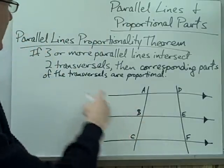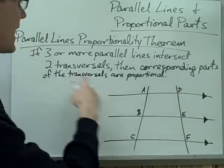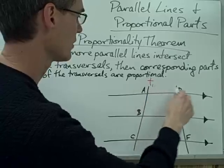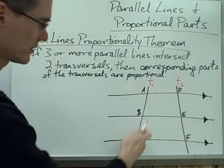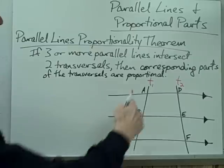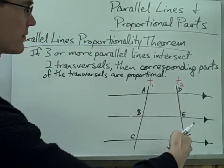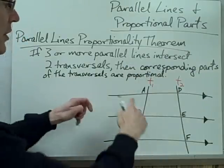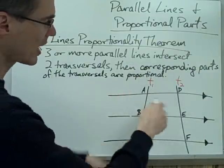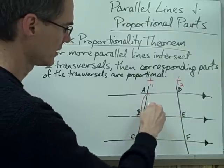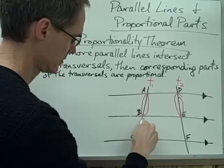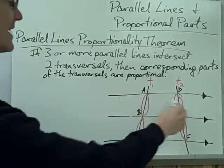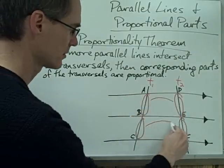Here I've got a diagram with three parallel lines, and those parallel lines are intersecting these two transversals — I'll call this T1 and T2, transversal 1 and transversal 2. These three parallel lines are intersecting these two transversals, so according to this theorem, the corresponding parts of the transversals are proportional. The parallel lines are basically chopping up these two transversals into these parts here and here, and this theorem says those corresponding parts are proportional.